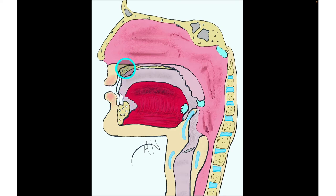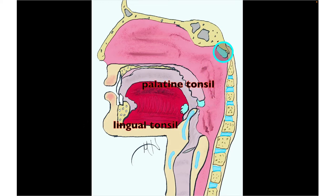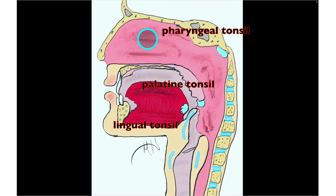This is part of the maxilla, which forms the hard palate or roof of the oral cavity, and this is the soft palate. Here we can see the tongue, and also some tonsils we discussed when covering the immune system — the lingual tonsil, the palatine tonsil, and the pharyngeal tonsil.